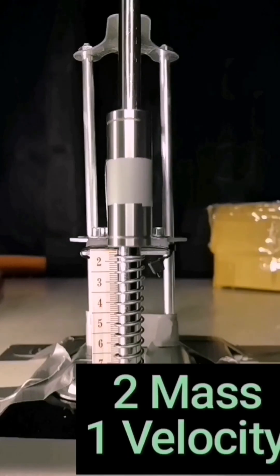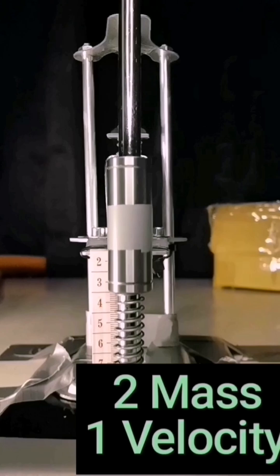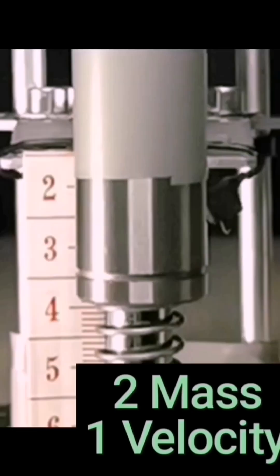This is the two mass falling from one height achieving one velocity and we're getting a rough compression of 19 millimeters.